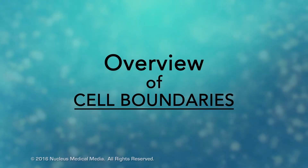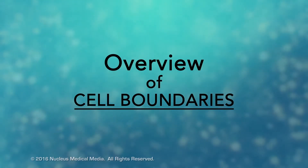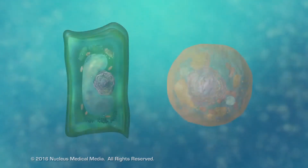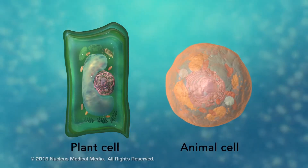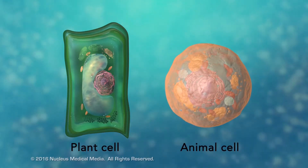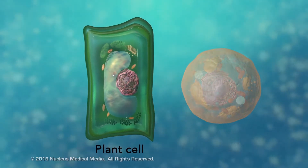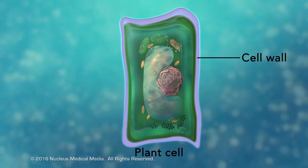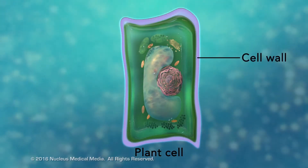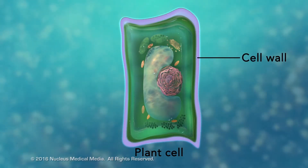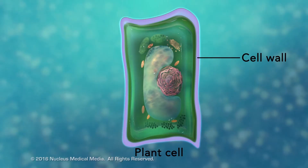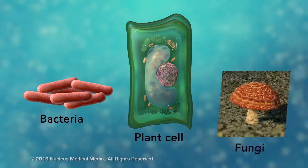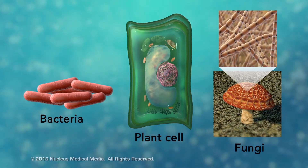Today, we're going to talk about the outer boundary of cells. Every cell has a boundary to separate it from its surroundings. You may already know that plant cells have a rigid outer boundary, called a cell wall. Other organisms, such as bacteria and fungi, also have cell walls.